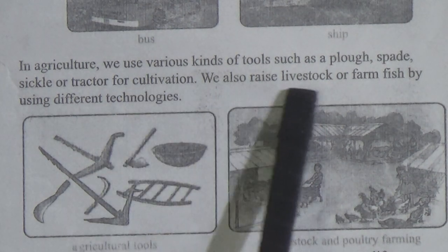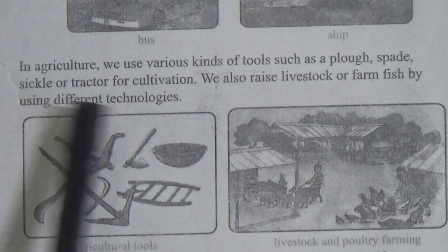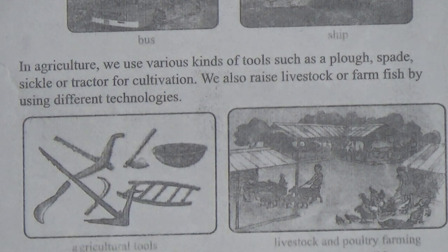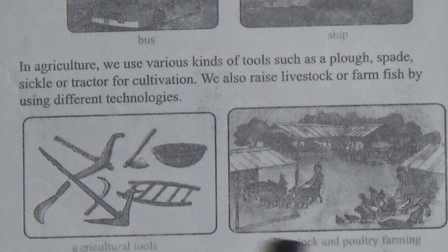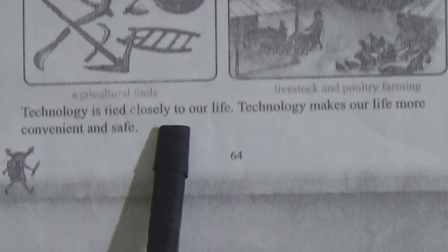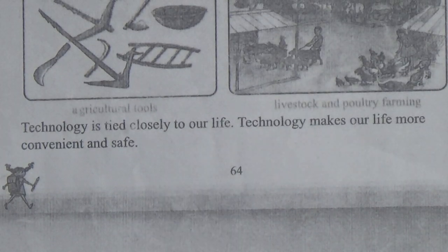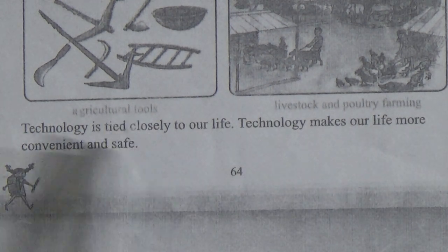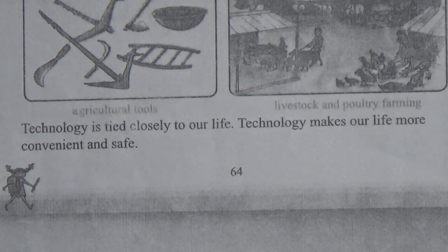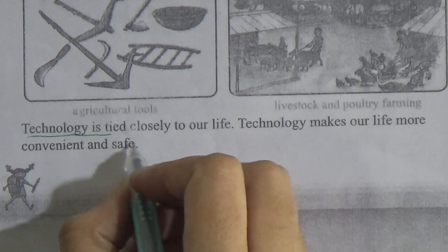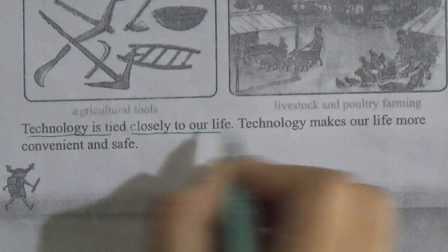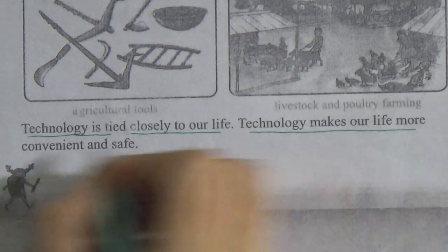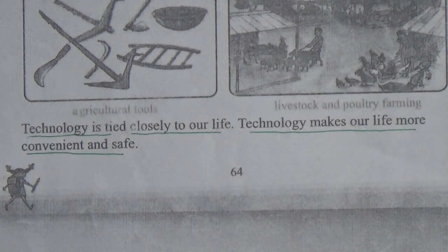We also raise livestock or farm fish by using different technologies. Here are agricultural tools, and here is livestock and poultry farming. Technology is tied closely to our life. Technology makes our life more convenient and safe. Students, you can underline this line: Technology is tied closely to our life. Technology makes our life more convenient and safe.